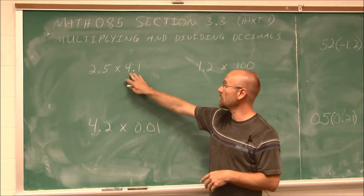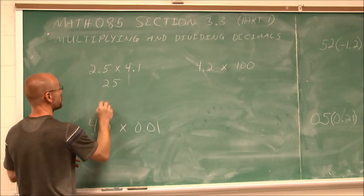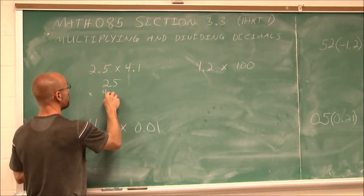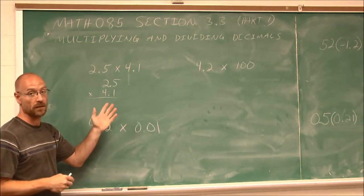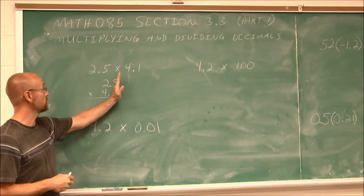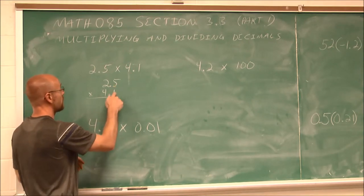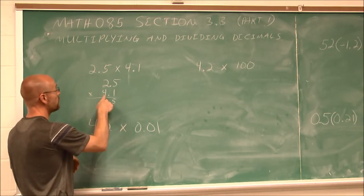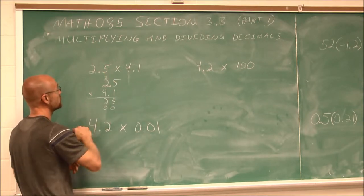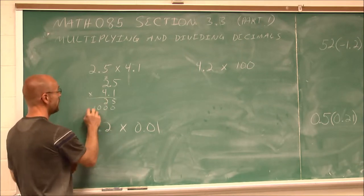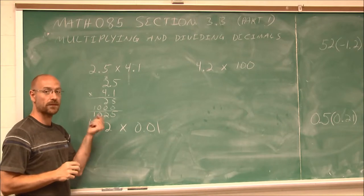The first example is 2.5 times 4.1. I'm going to write them vertically: 2.5 times 4.1. When we multiply decimals, unlike adding or subtracting where we line up the decimal, we just line them up on the right side. So to multiply, we do it as we normally would: 1 times 5 is 5, 1 times 2 is 2. Then we move to the next place and put a placeholder. 4 times 5 is 20, carry the 2. 4 times 2 is 8, plus 2 is 10. Now we sum up these partial products: 5, 2, 0, 1.